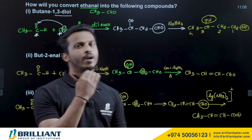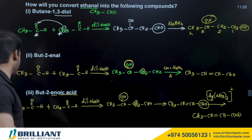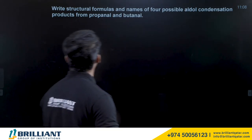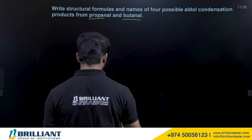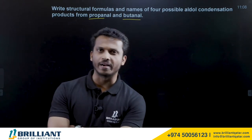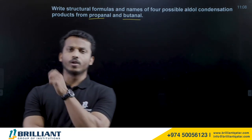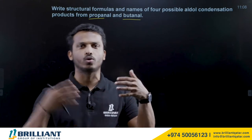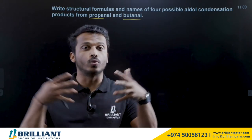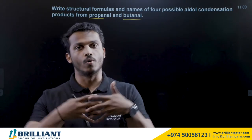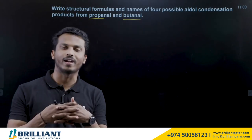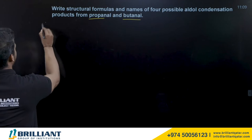Key rule: if your starting aldehyde has 2 carbons and the final product has 4 carbons, you must first do aldol condensation, then apply the appropriate next steps. Now write the structural formula and name of four possible aldol condensation products from propanol and butanol. There are two types: normal aldol condensation (same aldehyde) and cross aldol condensation (two different aldehydes).